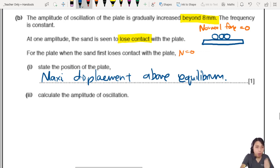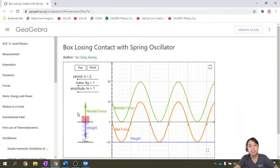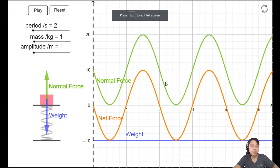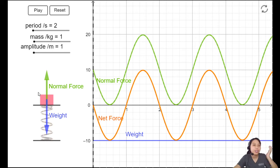When you increase the amplitude beyond 8, it's actually off the graph. We only have 8, but we're going further than 8. So where does that happen? You need to imagine going up at the highest point. That is where you lose contact with the plate. So you can say, position of maximum displacement. Maximum displacement above or below equilibrium? You want to say above equilibrium or upwards. Next part. Calculate the amplitude of oscillation. And what is this for? When the sand loses contact with the plate.